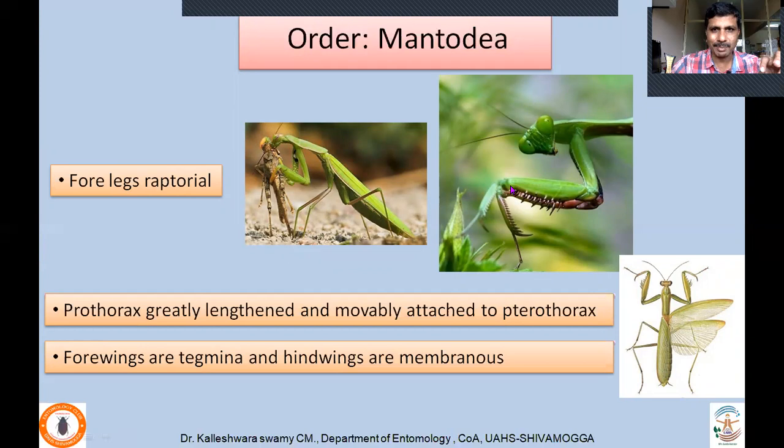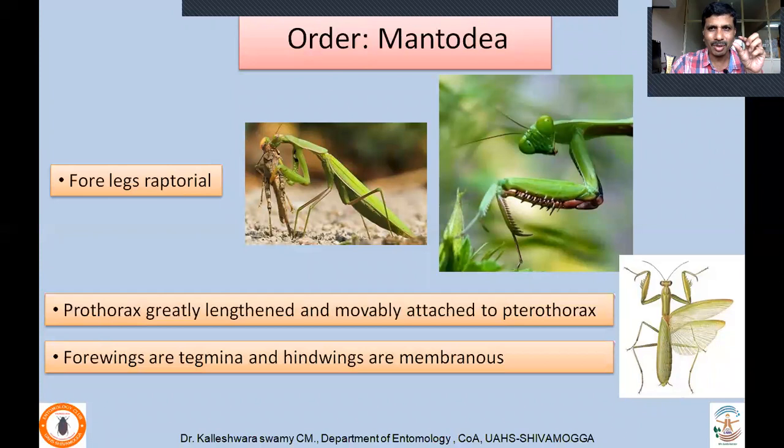Forelegs are raptorial — predaceous and prehensile type. The femur and tibia have spines; with the help of those spines, it captures prey, holds it between the femur and tibia, and devours it. Prothorax is greatly lengthened — you can see here the pronotum is actually longer, unlike in Phasmatodea where pronotum is shorter. The pronotum is movably attached to the pterothorax, which is the wing-bearing segment of the thorax (mesothorax and metathorax). Forewings are tegmina; hindwings are membranous.